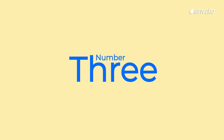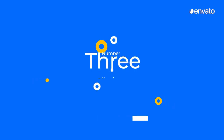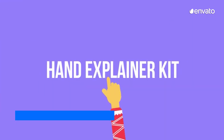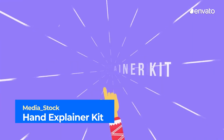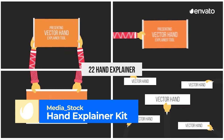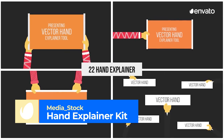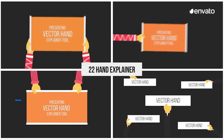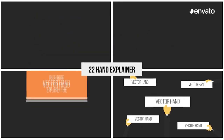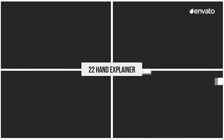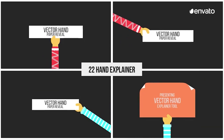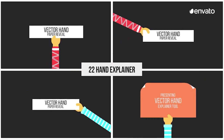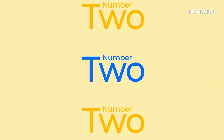Number 3: Hand Explainer Kit by MediaStock. With all the enthusiasm of a multi-purpose template kit, this pack contains 23 unique animations, 6 typography options, 10 shape elements, and many more features that are perfect for explainer videos.